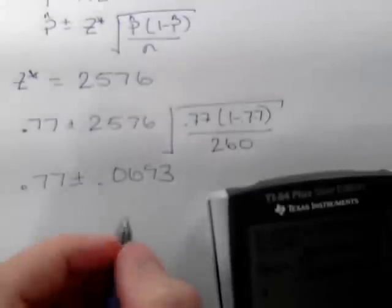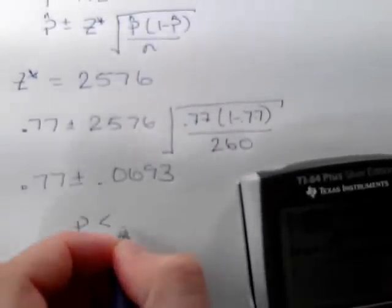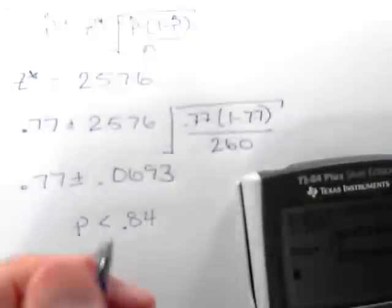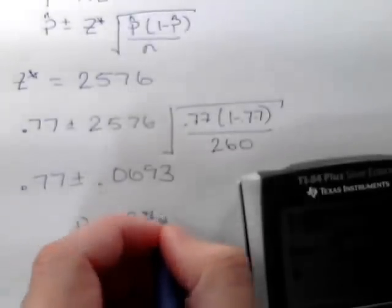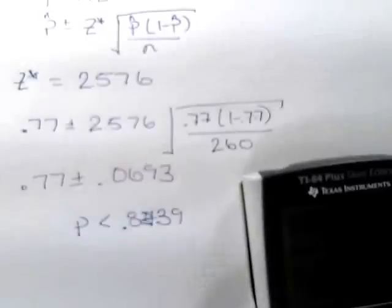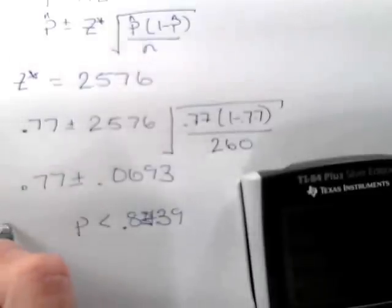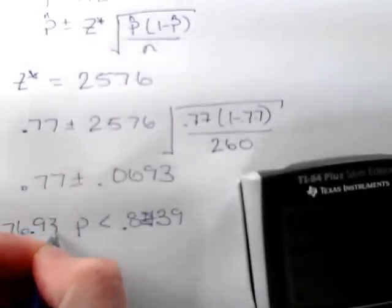Adding to 0.77 gives us 0.839, rounded to three decimal places. Subtracting 0.77 minus 0.0693 gives 0.7007.